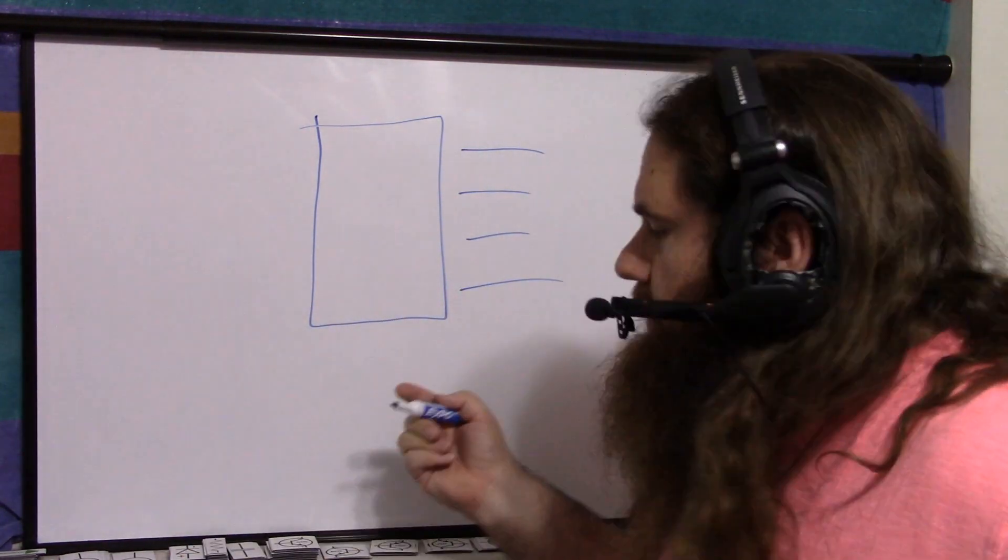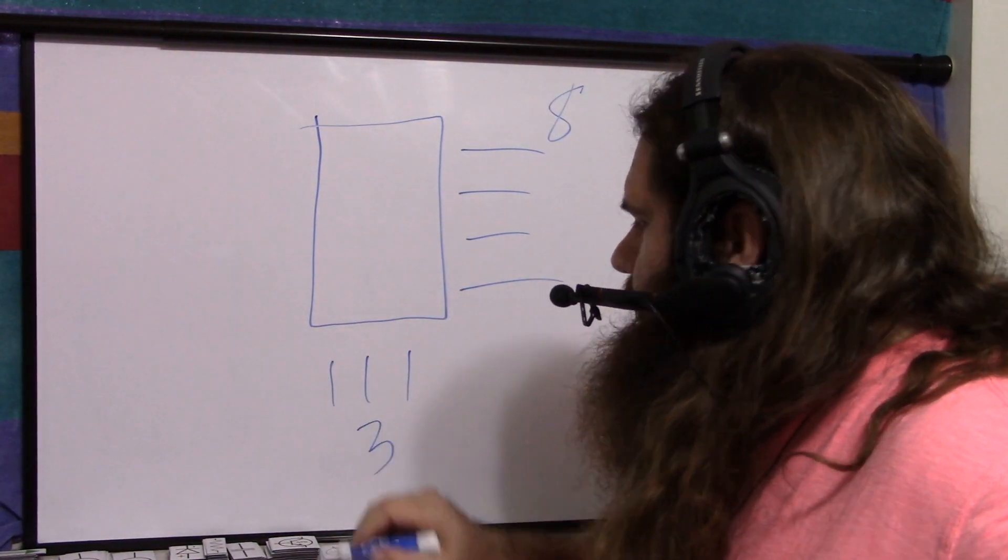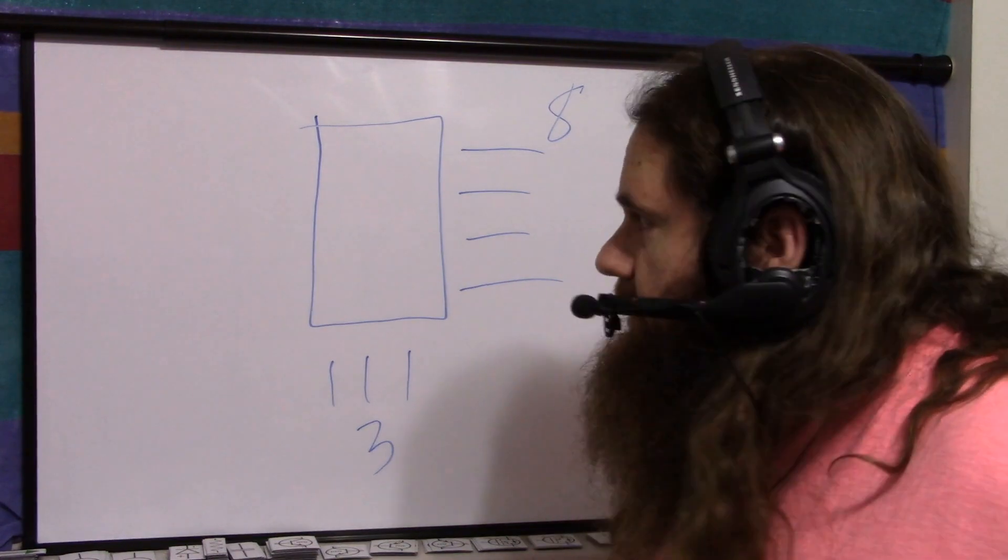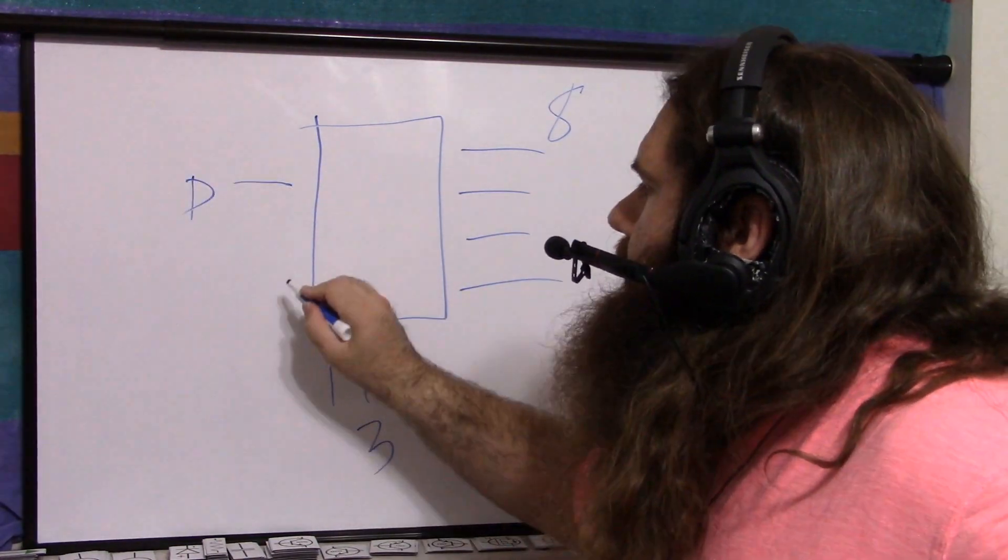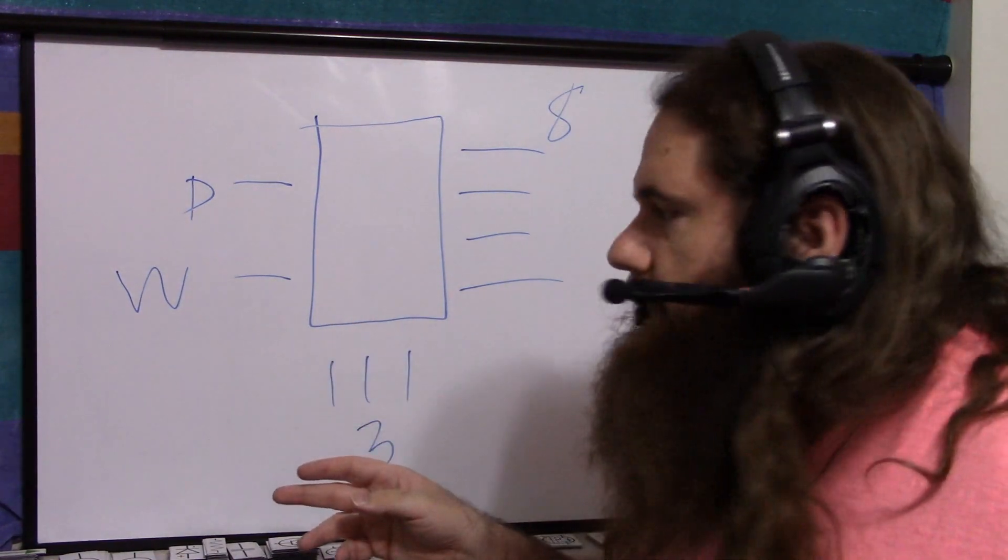The addressable latch has however many outputs. Let's say eight. It's eight bit. Just like before, you've got your three address bits, address lines. You've got your data line. But you also have your write line, similar to a clock.